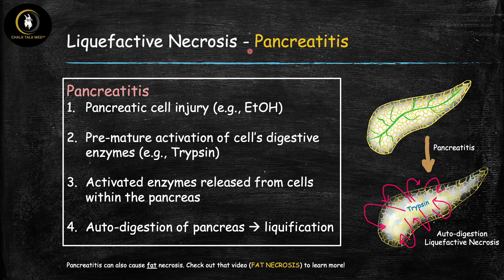The final cause of liquefactive necrosis is pancreatitis — inflammation of the pancreas. The pancreas contains digestive enzymes that break down proteins, lipids, and carbohydrates, secreting them into the lumen of the small intestine to digest macromolecules from our diet. Under normal circumstances these enzymes are in their inactive form, called zymogens. While still in the pancreas they are inactive; once secreted into the small intestine they become activated and break down macromolecules. This checkpoint is lost during pancreatitis.